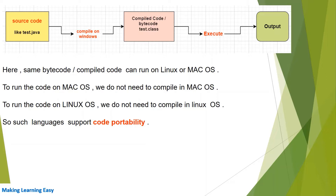Let's understand platform-independent language with the help of an example. On the left side in the yellow box is the source code. I have taken the example of Java, so the file name is test.java. We are compiling it on a Windows system, and after compilation we get the bytecode, also called the compiled code. The file name is test.class. Then we execute this code and get the output.